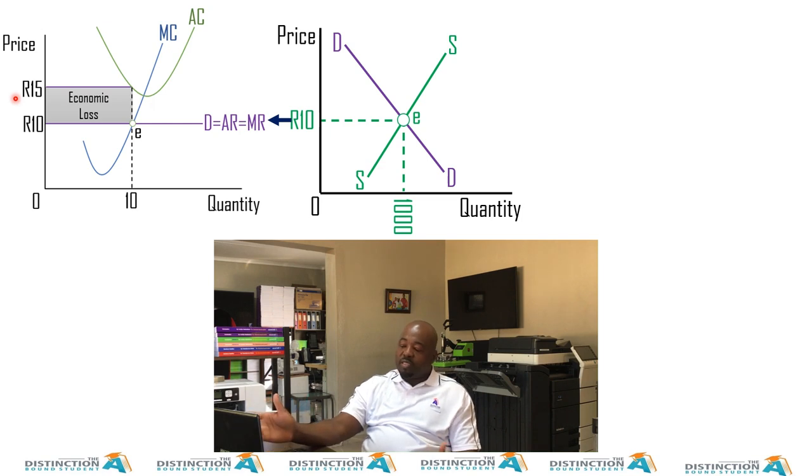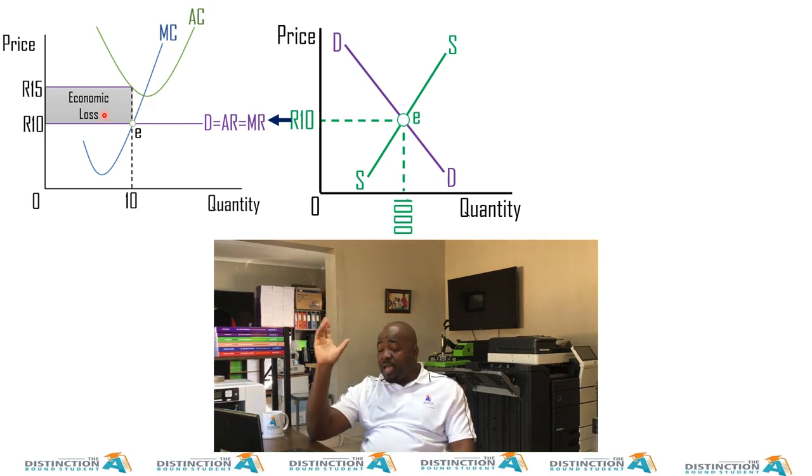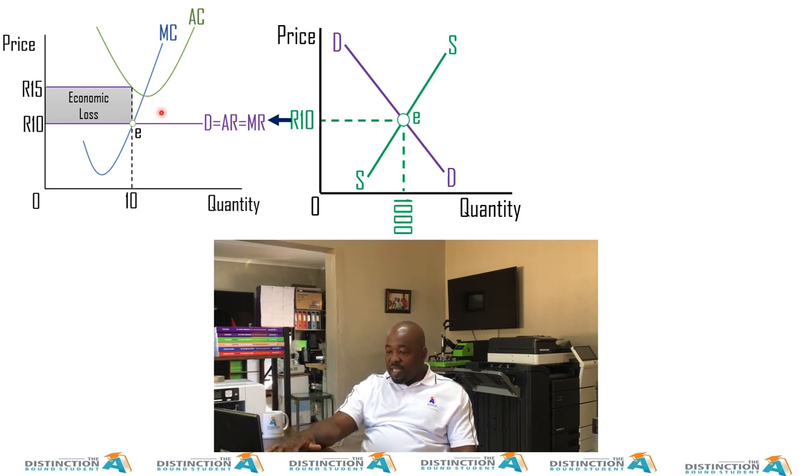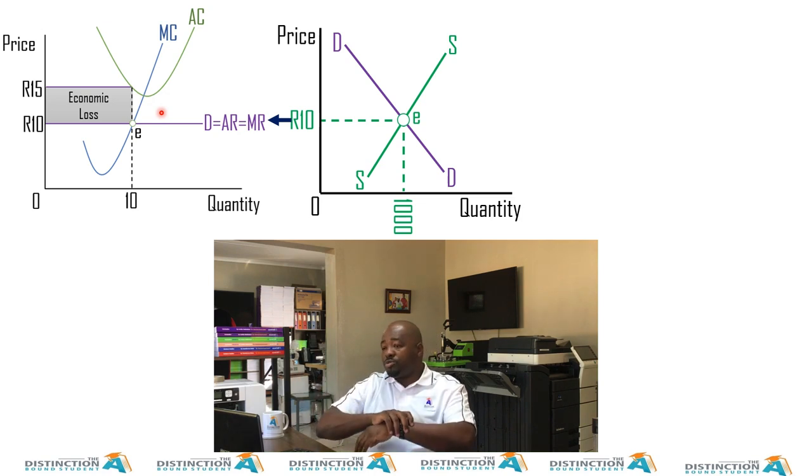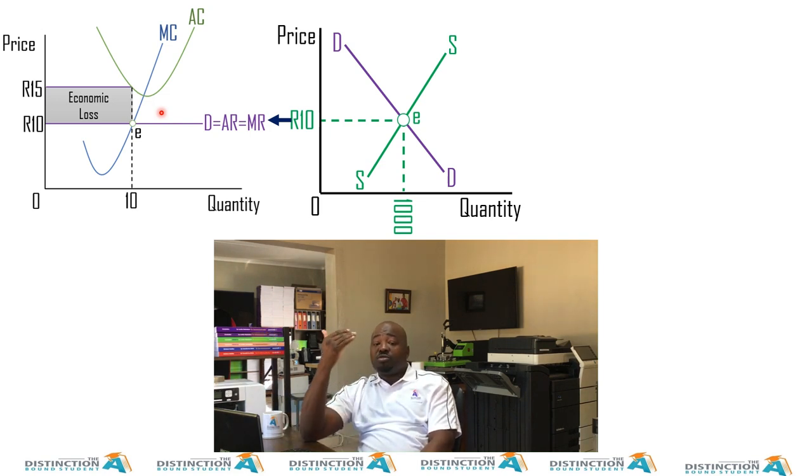When we look at this person's cost curves, we realize that the cost is higher than the revenue. So this firm is making an economic loss of 5 rand per unit. And the total economic loss, we then say 5 times 10, which is 50 rands. I explained these graphs, that's why I just put it there so I don't waste time on that. That's not today's lesson.